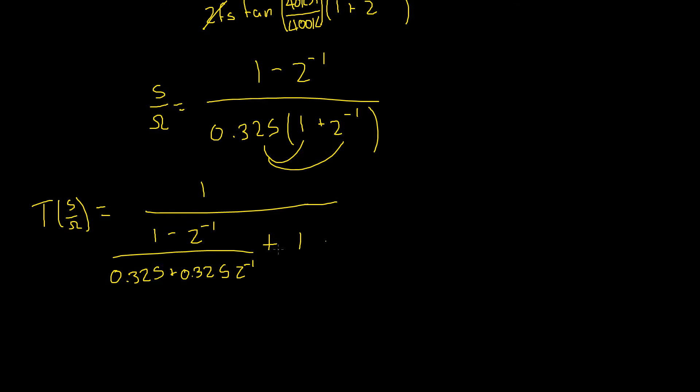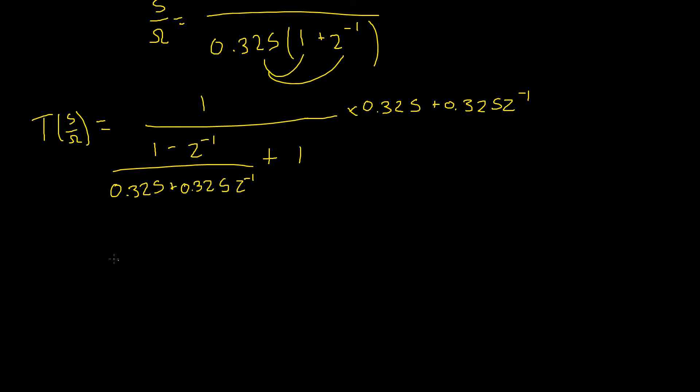Now, I think you know what we're going to do next. We're going to multiply through top and bottom by 0.325, 0.325 plus 0.325 z to the power of negative 1. Okay, so doing this, we'll remove our ugly denominator here and hopefully make things a little bit more simple. The numerator will simply become 0.325 plus 0.325 z to the power of negative 1.